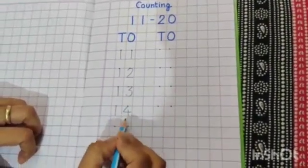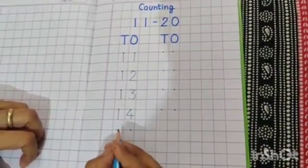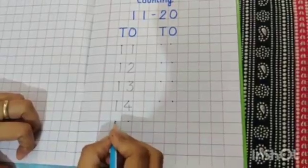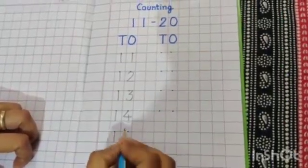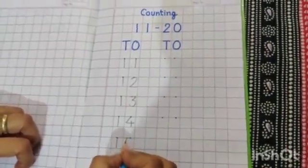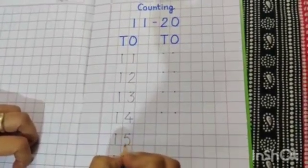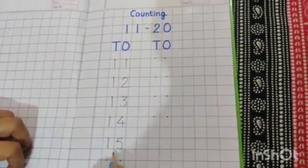After 14, what will come? Yes, 15. 1, 5, 15. After that?